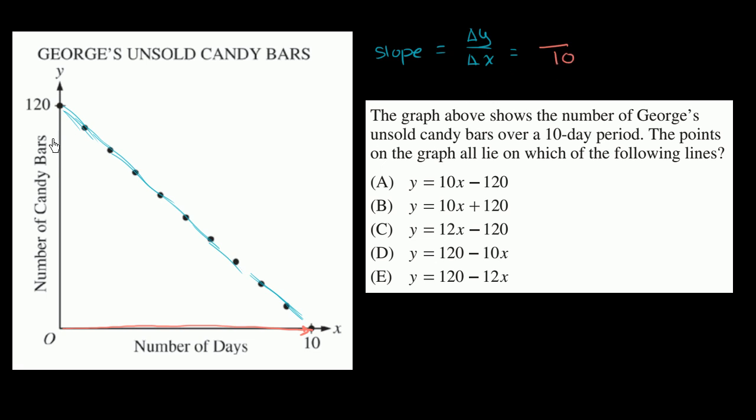And so what was the change in our vertical? Well, the change in our vertical was 120 candy bars, or negative 120. So we went down. When number of days increased by 10, positive 10, our candy bars decreased by 120. Decreased by 120, and so what's that going to be? That's going to be negative 12.